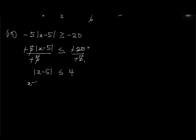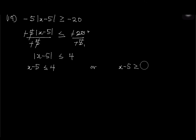Continuing question 19: two statements: x minus 5 less than or equal to 4 giving x less than or equal to 9; or x minus 5 greater than or equal to negative 4 giving x greater than or equal to 1.